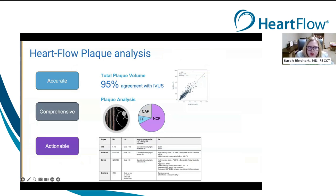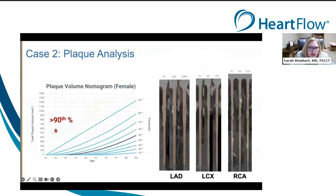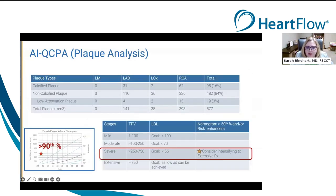The problem is what is 'aggressive' to one person may not be to another — are we really reaching targets, and how are we tracking changes over time? The HeartFlow plaque analysis is very accurate: the REVEAL plaque study showed 95% agreement with IVUS. Looking at our patient's plaque analysis, she is above the 90th percentile for total plaque volume — over 577 cubic millimeters, with 84% non-calcified plaque and low-attenuation plaque present as well.